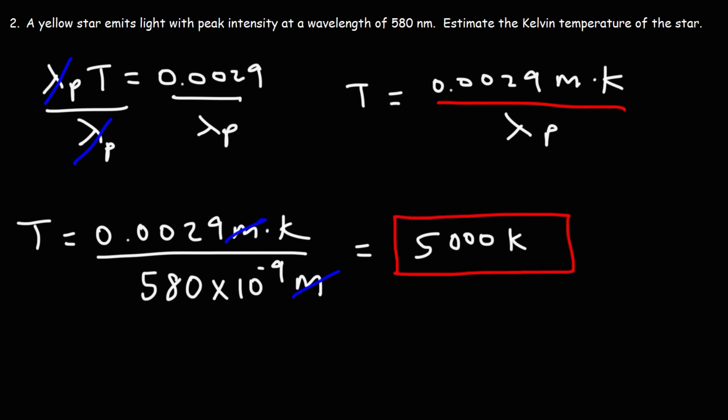That's the surface temperature of this star, approximately according to Wien's law, of a yellow star or of a star that emits yellow light. That's basically it for this video. Hopefully this gave you a good introduction on blackbody radiation and how to use Wien's law to estimate the temperature of a very hot object.